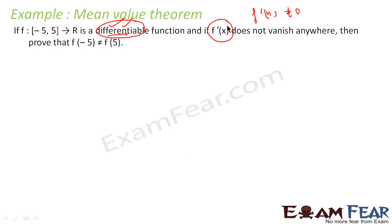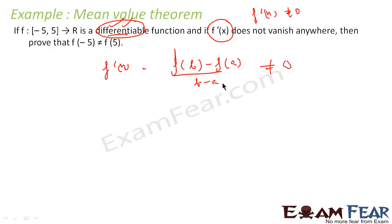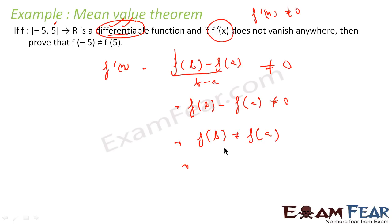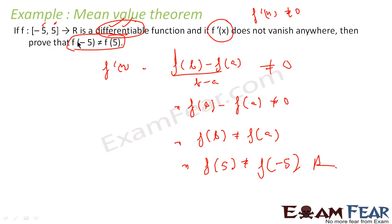This is a simple question. If f'(x) does not vanish, I know f'(x) will be something — specifically f'(c) = (f(b) - f(a)) / (b - a), and this is not equal to 0. Since f'(c) ≠ 0, the numerator f(b) - f(a) ≠ 0, which means f(b) ≠ f(a). With b = 5 and a = -5, this means f(5) ≠ f(-5). Since f'(x) does not vanish anywhere, for any point c in this range f'(c) ≠ 0, and therefore that expression is also never 0. Thus f(-5) ≠ f(5) is proved.